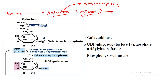The second enzyme is UDP-glucose:galactose-1-phosphate uridylyl transferase. From the name, we can understand this is a transferase enzyme that transfers a uridyl group from UDP-glucose to galactose-1-phosphate. Galactose-1-phosphate is the acceptor and UDP-glucose is the donor. The UDP group is transferred from glucose to galactose, while galactose-1-phosphate transfers its phosphate group to glucose — so there is an exchange.